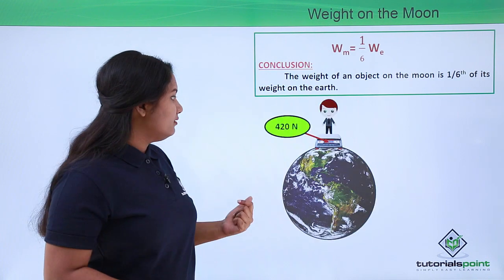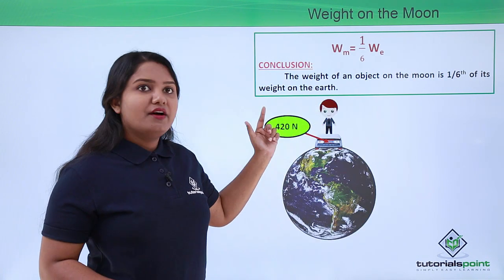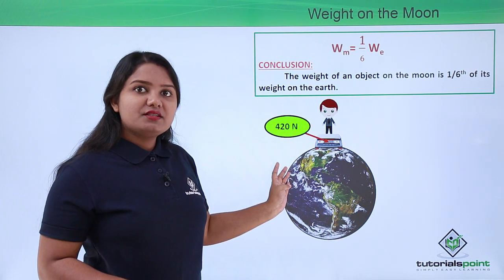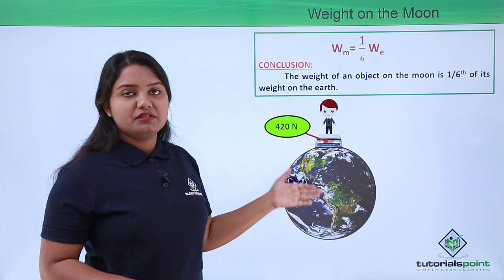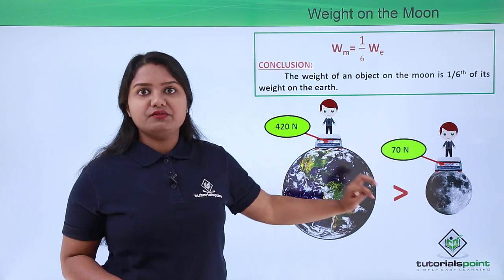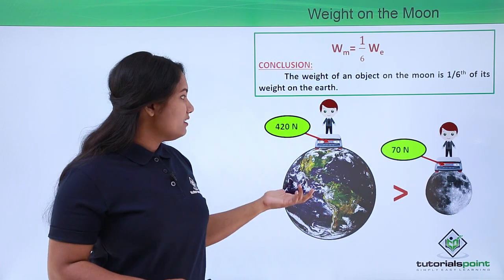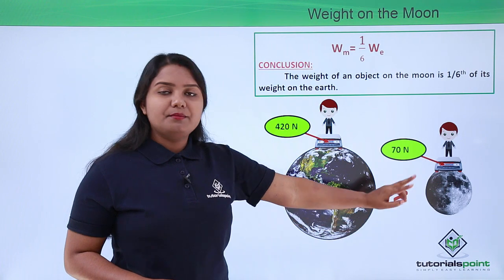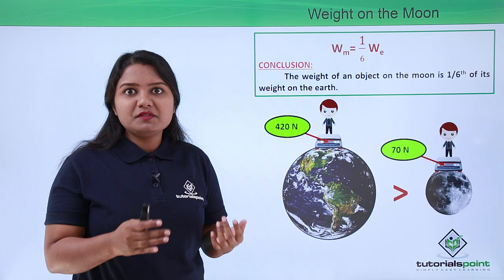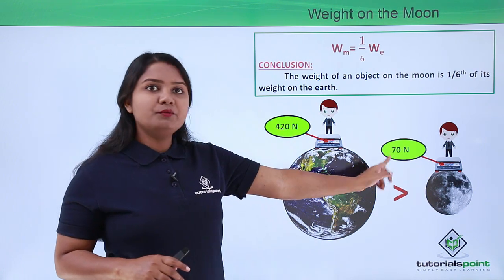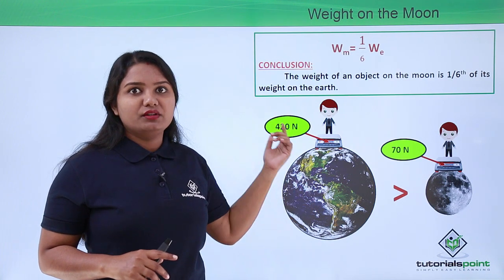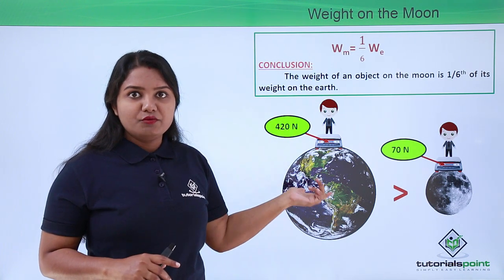For example, if a boy has a weight of 420 newtons on the surface of the earth, then his weight on the surface of the moon will be one-sixth of that, which is 70 newtons. The weight on earth is 6 times greater than on the moon. This is how we can calculate the weight of an object on the moon if its weight on earth is given, or vice versa.